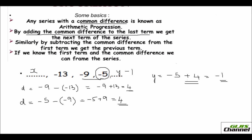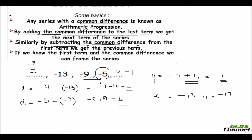Now to find the previous term of the series, we subtract the common difference. So from the first term, which is negative 13, take away the common difference of 4. So I took away 4 from negative 13 and get negative 17. So my x is negative 17. Likewise, you can find the last term and the previous term.